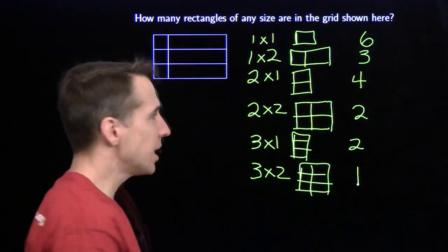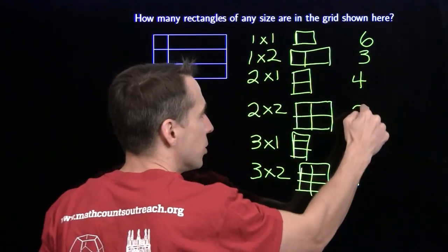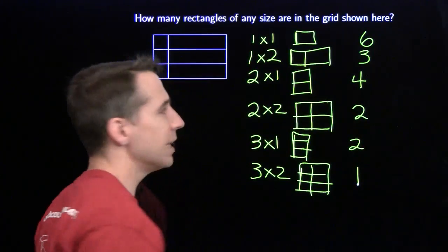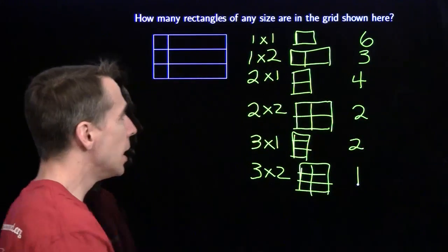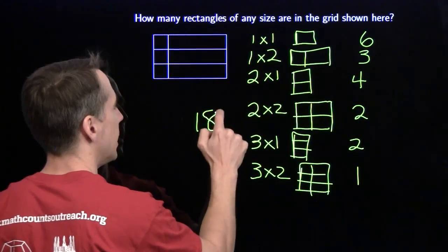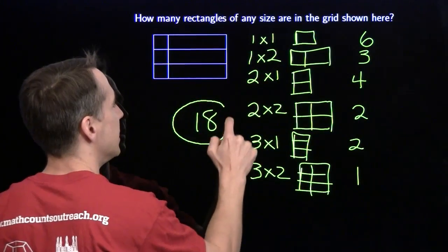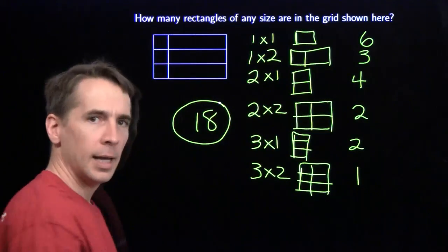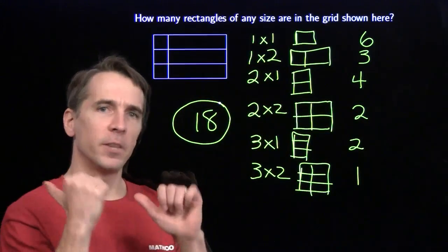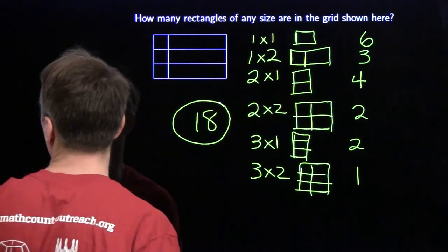So it's time to add them up. Six and four is ten. Then three, two, two, and one — that's eight more. Ten and eight is eighteen.